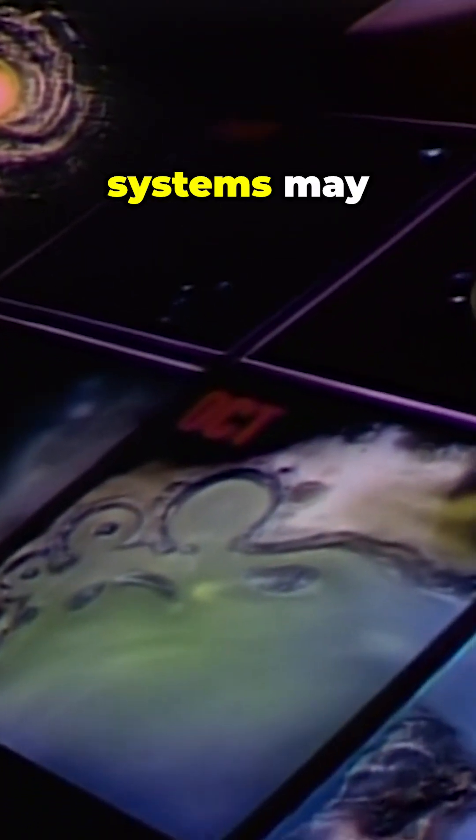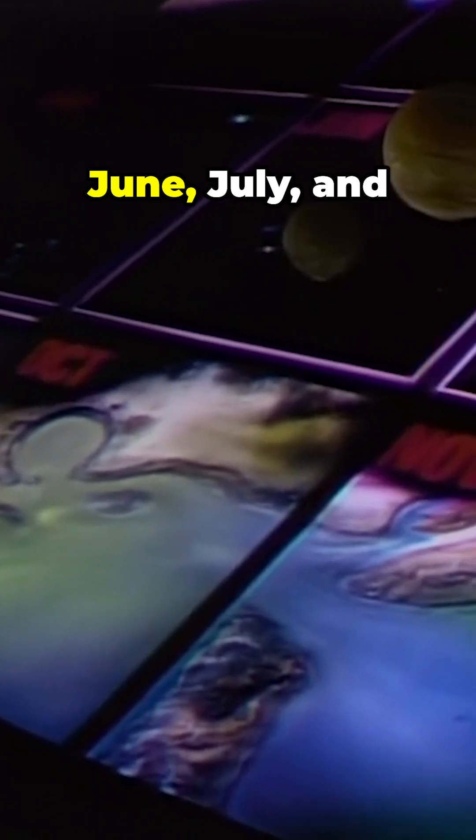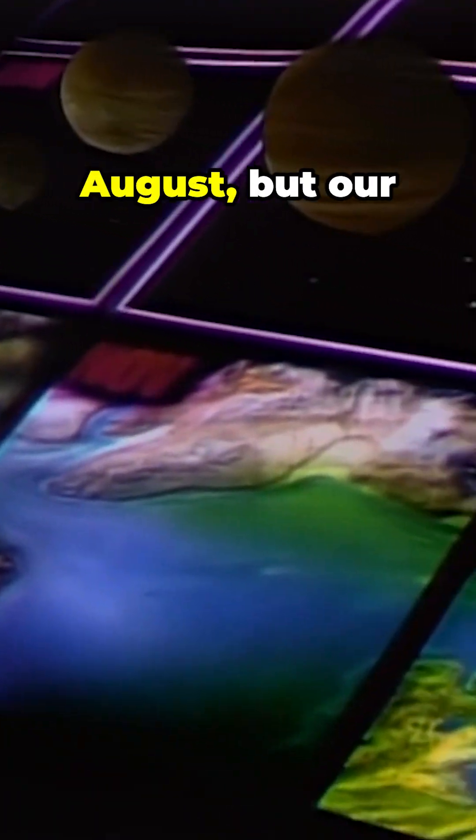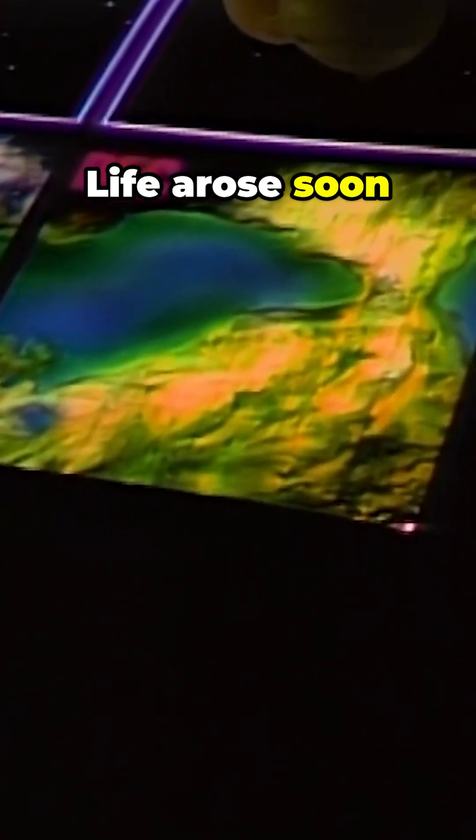Other planetary systems may have appeared in June, July, and August, but our sun and Earth not until mid-September. Life arose soon after.